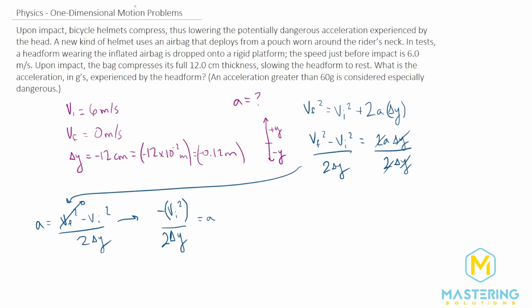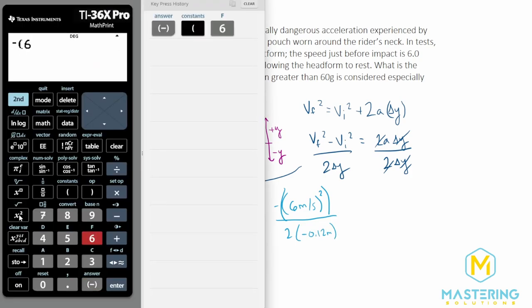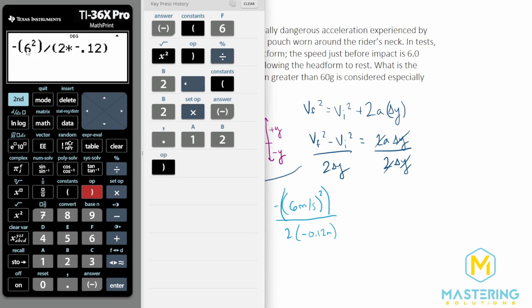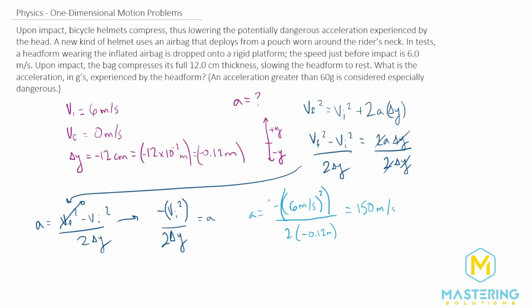Now let's plug in our numbers. Acceleration equals negative, and the initial velocity was 6 meters per second. We'll square that value divided by 2 times delta Y, which is negative 0.12 meters. So negative 6 squared divided by 2 times negative 0.12. We have a negative value on top and negative on the bottom, which gives us the proper answer. The acceleration is 150 meters per second squared.